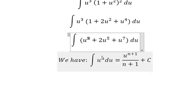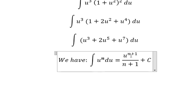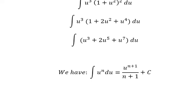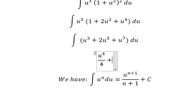And now we substitute: 3 plus 1 gives us 4, so we have u to the power of 4 over 4. The next one is 5 plus 1, which gives us 6.